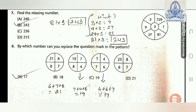Question 8: By which number can you replace the question mark in the pattern? In the first diagram, add the three numbers to get 21. In the second diagram: seven plus four plus eight equals nineteen. In the third diagram: four plus six plus seven equals seventeen. So the question mark is replaced by seventeen. Option A is right.